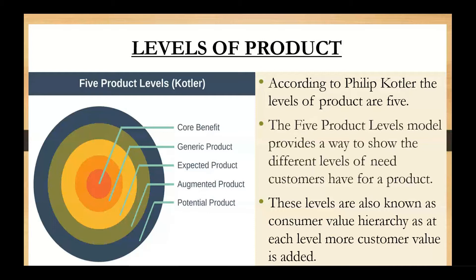In this model, what he has said is that there are five levels which each and every product goes through during its lifetime. The first level is called the core benefit or core level of the product. The second level is called the generic level. The third level is the expected level. The fourth is the augmented level, and the fifth is the potential level. Each of these levels shows different needs which will be fulfilled by a product for the customer.